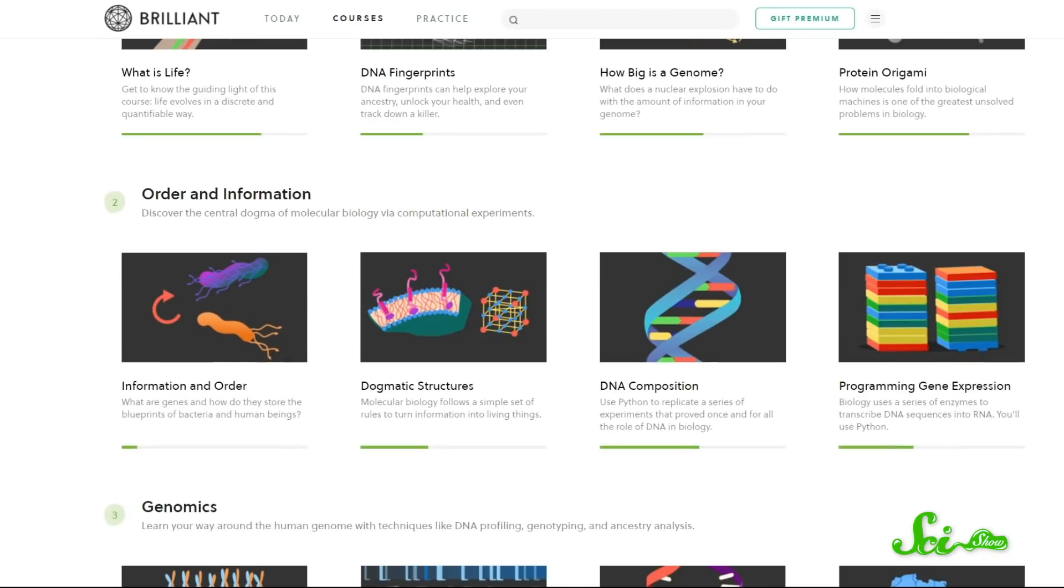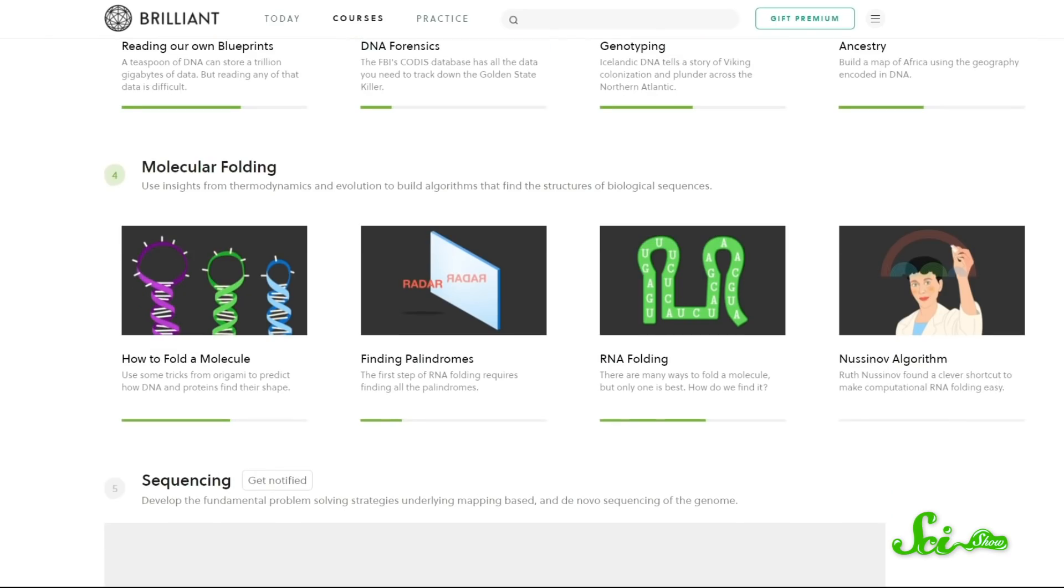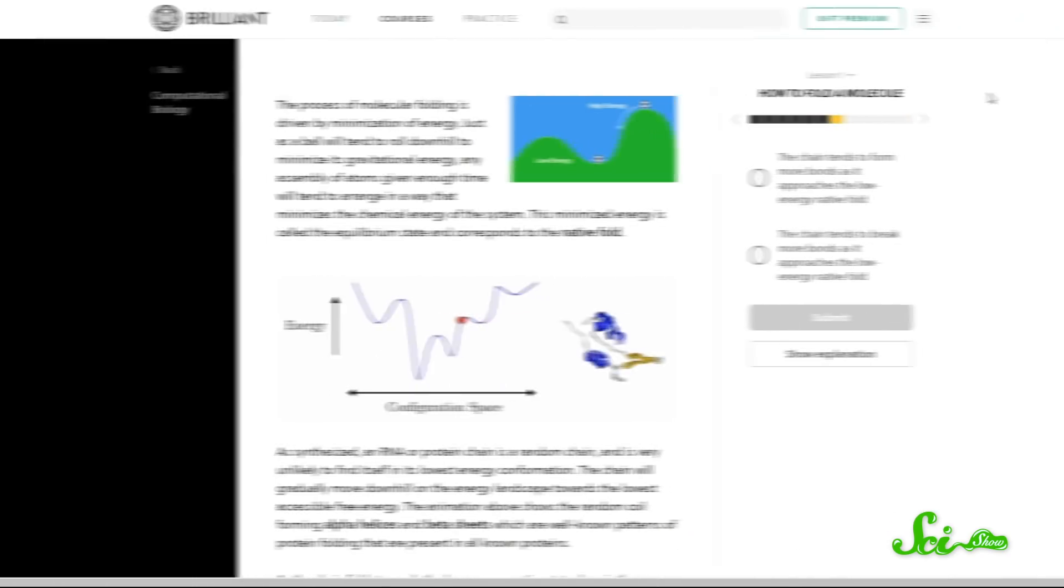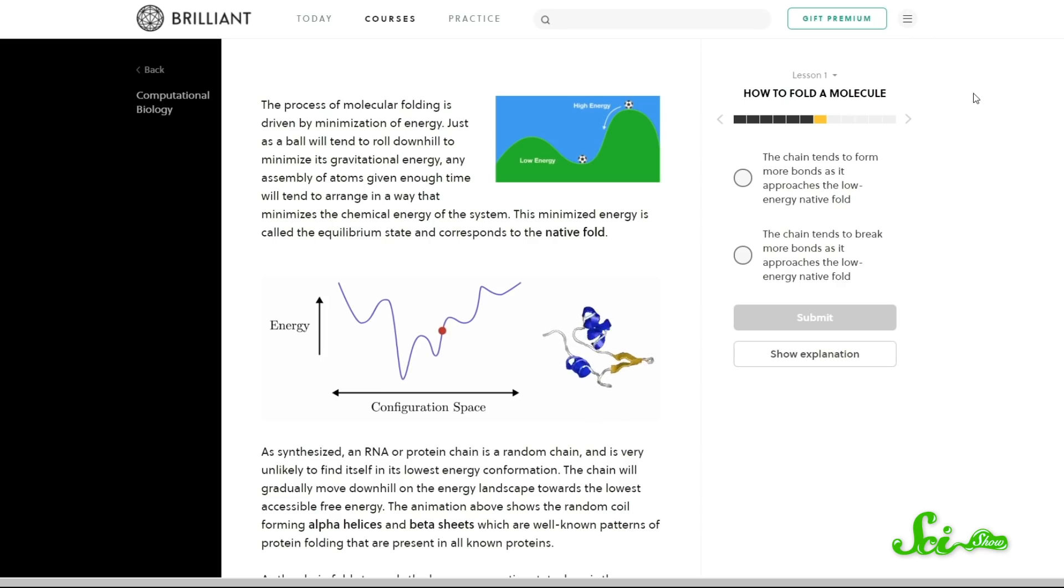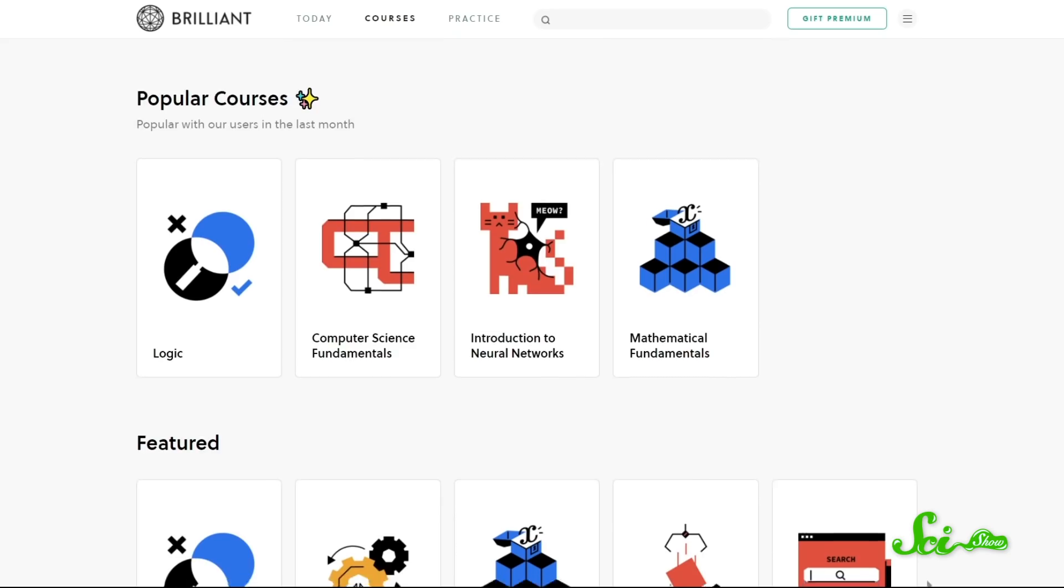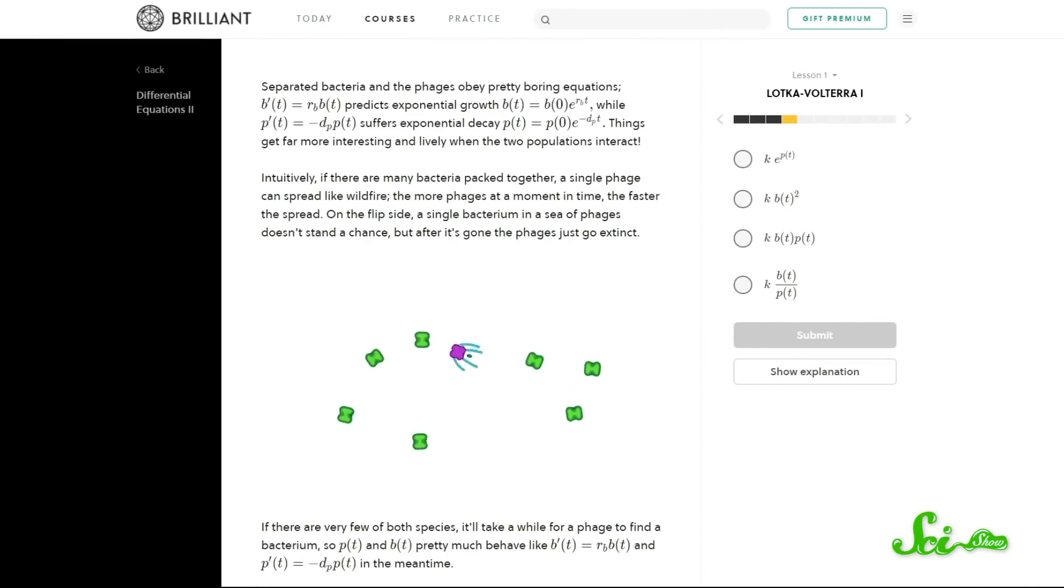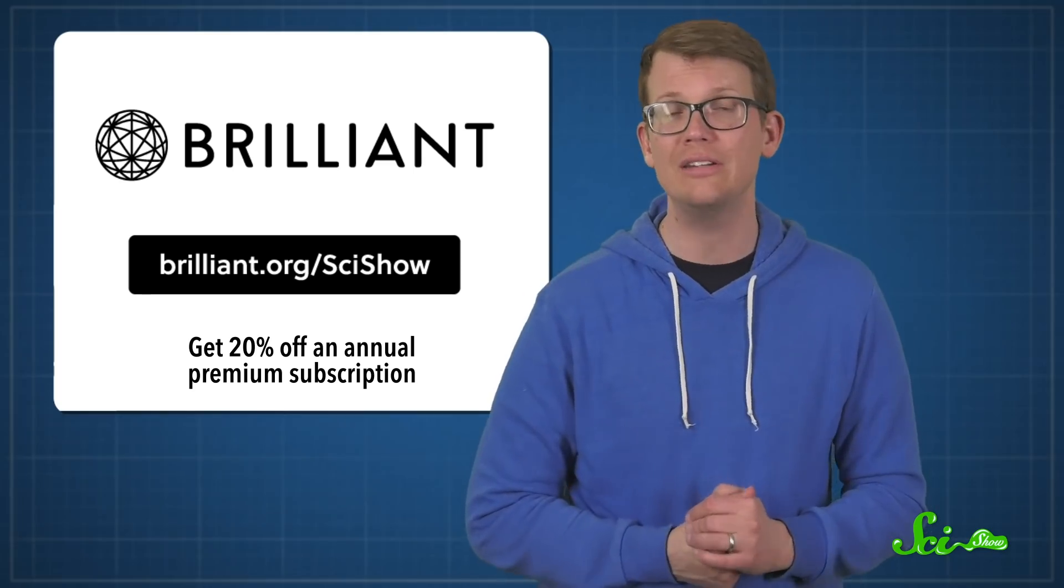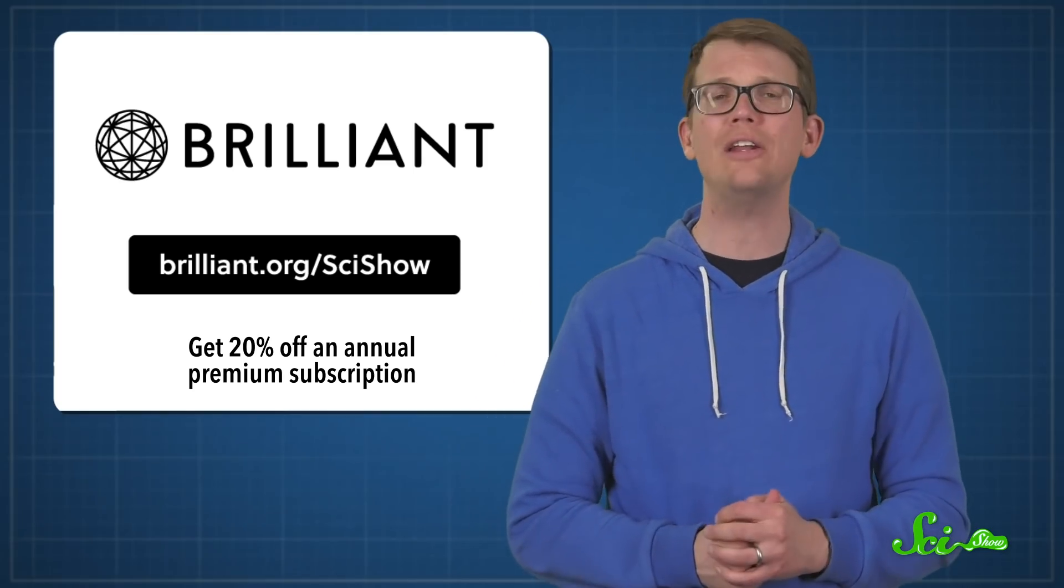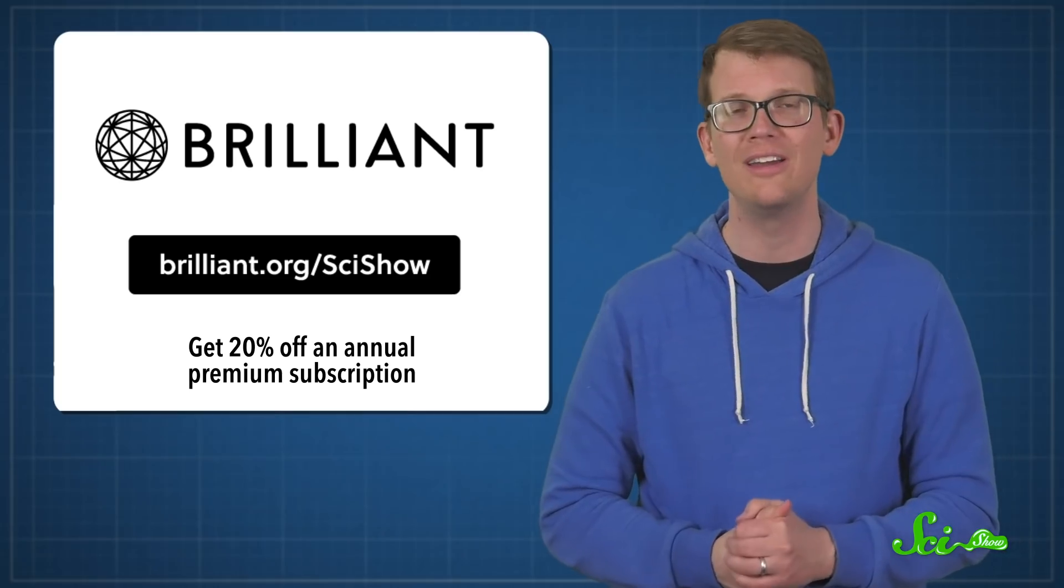If this video has left you wanting to learn more about life's surprising complexities, then you might enjoy a course from Brilliant. Computational biology will teach you about the overlap between computer science and biology, which biologists use more and more. Like, to predict how a complex molecule will fold, or compare genome sequences to one another. And you're sure to find a course that suits you from their collection, spanning from math to computer science and basic science to engineering, all with illustrated interactive exercises to help you along the way. If you're interested, you can check out Brilliant.org/SciShow for a chance to get 20% off an annual premium subscription. And thanks.